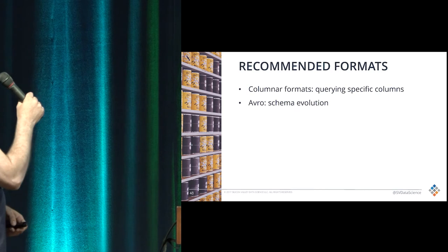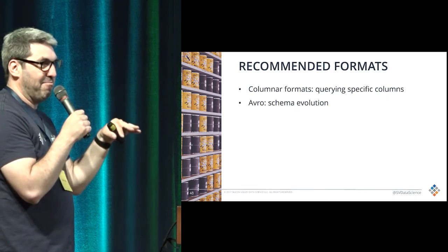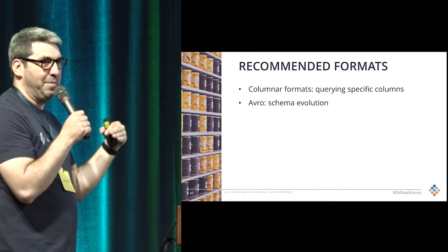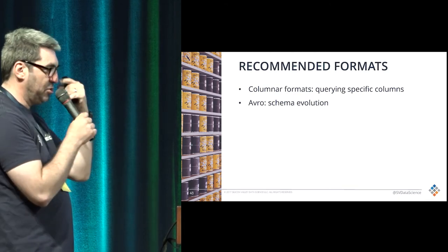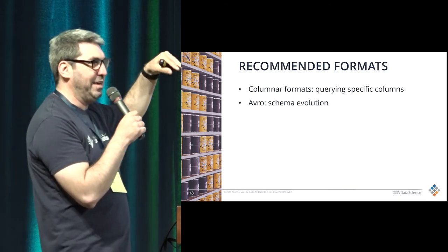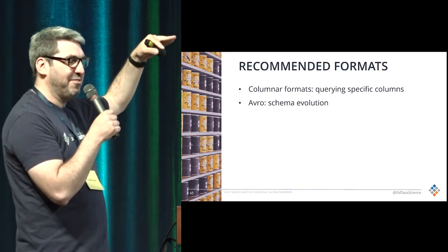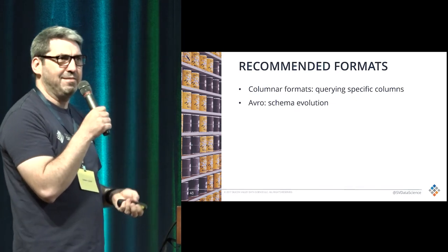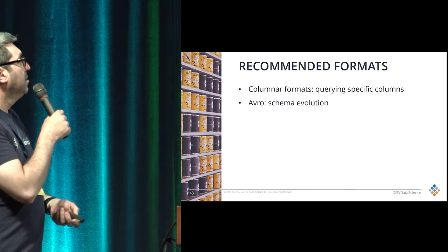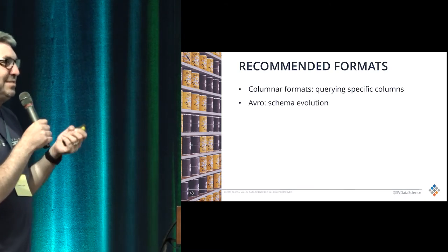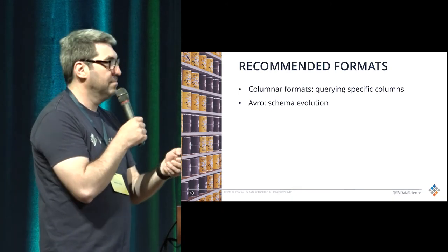Recommended formats: as you saw, a columnar format when querying specific columns is going to always be better. There is a sweet spot — in the client example it was about 40 columns, in the other tests it goes up to about 60 or 80. In some cases it's like, why am I using any other format rather than columnar? And if you want schema evolution, then you have Avro, but you take the hit on query time.